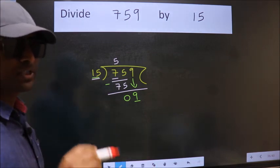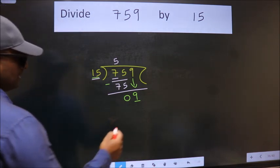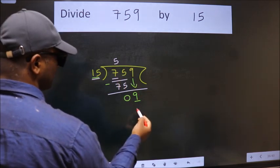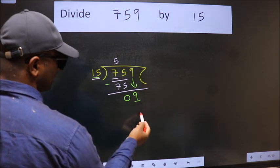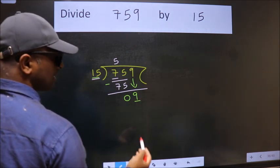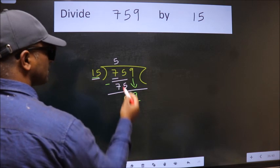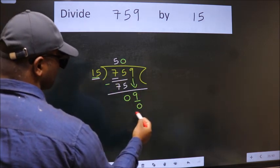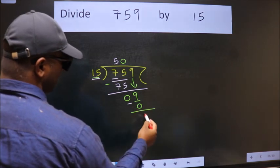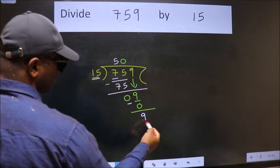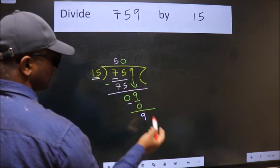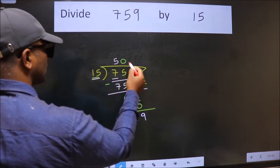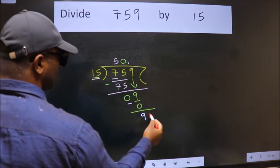Instead of that, what we should think of doing is which number should we take here. If I take 1 we get 15, but 15 is larger than 9. So what we do is we take 0 here. So 15 into 0, 0. Now we subtract, we get 9. Over here we did not bring any number down.